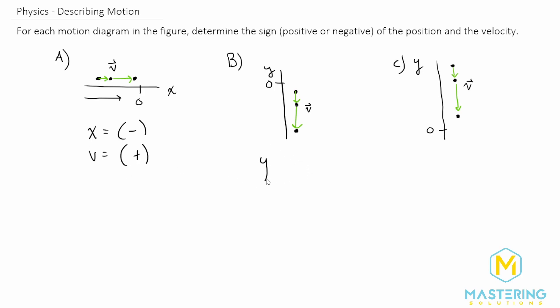Now going to part b, the position y will be the same thing. It's all below the zero, so it's all on the negative side of the y-axis, so all of these will have a negative position.